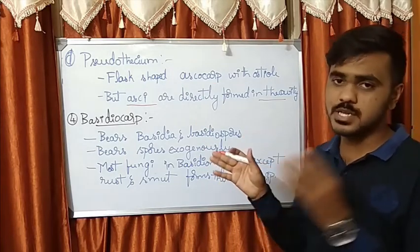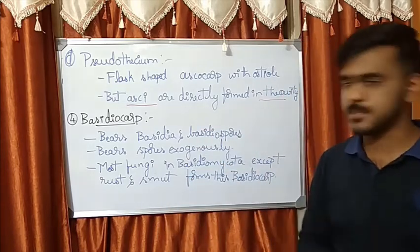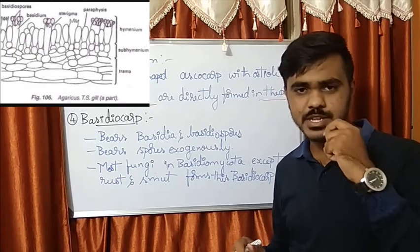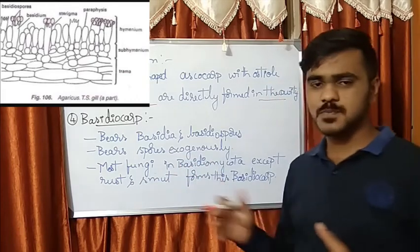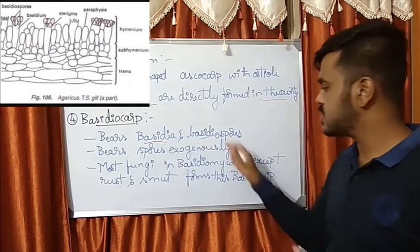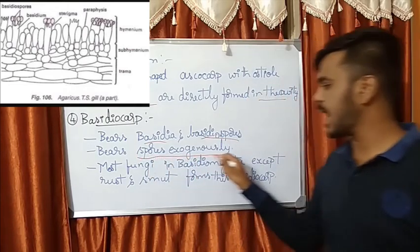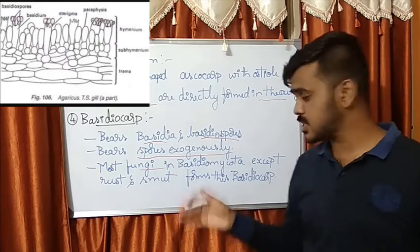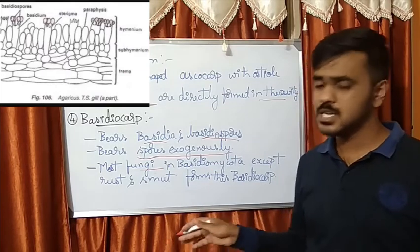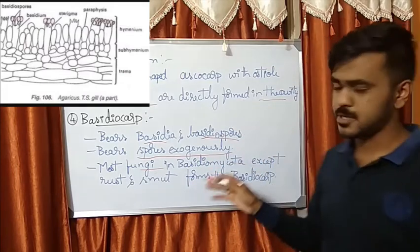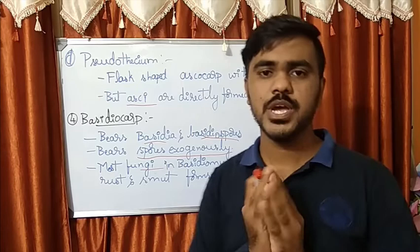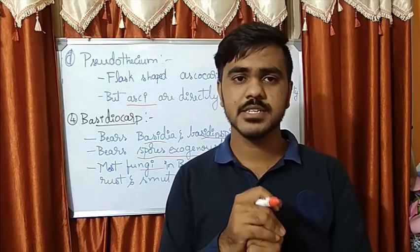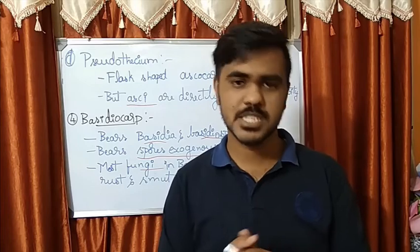The fourth sexual fruiting body is the basidiocarp. I have explained the basidium and basidiospore formation in detail in the previous video — please refer to that. The basidiocarp bears basidia and basidiospores, and the spores are exogenously formed, meaning they are outside the fruiting body. In Basidiomycota, most fungi — except rusts and smuts — form a basidiocarp. I hope you have enjoyed this fungi series; please watch and share with your friends. Thank you.